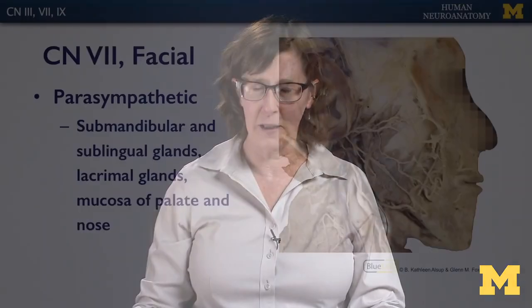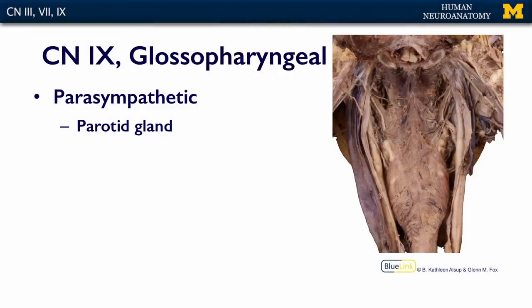The only exception to this is on the next slide: the parotid gland, which is innervated by the glossopharyngeal nerve. The glossopharyngeal, as you may recall from the lecture about the tongue and larynx, is very complicated — covering skeletal muscle and pharyngeal constrictors — but its parasympathetic component targets the parotid gland.